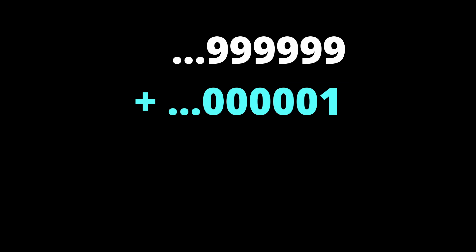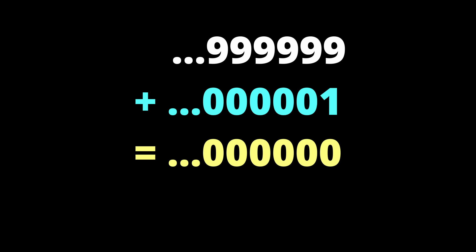What do we get? When you add the rightmost 9 plus 1, that gives 10, write down 0, carry 1, add to the next 9, that gives 10, write down 0, carry 1 and so on. The result is 0, 0, 0 all the way to infinity to the left, which is, well, 0.